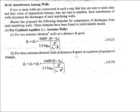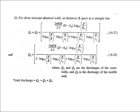If we have three artesian identical wells at a distance b apart from each other, we have another formula. For three artesian identical wells at distance b apart in a straight line, the formula used for the first and second well discharge is different from that for the middle well. The total discharge is the cumulative discharge of all three wells.